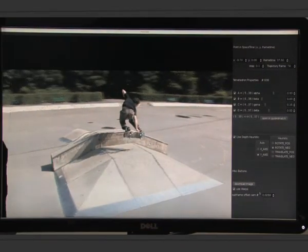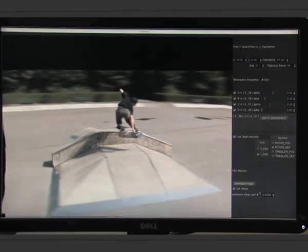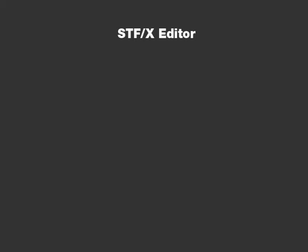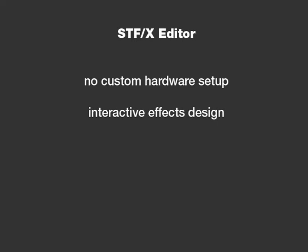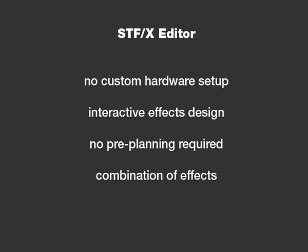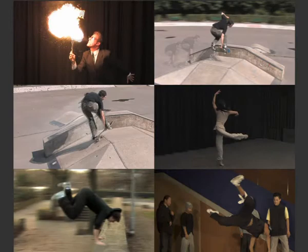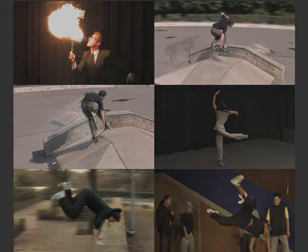Here we show the creation of a space blur effect around a freeze rotate shot. In summary, our system enables the creation of various special effects without the need for customized hardware setups. Effects can be easily created in our interactive editor. The desired camera path can be altered at any stage of production. Arbitrary visual effects can be combined to achieve the intended result. We will now demonstrate how different visual effects can be applied to real-world scenes.